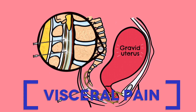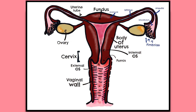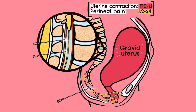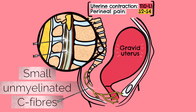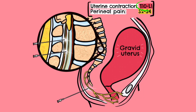Visceral labour pain originates from the uterus as a result of uterine contractions vital in aiding the delivery of the fetus. With each uterine contraction, pressure is transmitted to the cervix, causing it to stretch and distend. The stretching and distension of the cervix activates local excitatory nociceptive afferent nerves, which are often small unmyelinated C fibres. These afferents transit through the cervix through part of the inferior hypogastric plexus, then join sympathetic nerves in the sympathetic chain and synapse in the dorsal horn of the spinal cord via the T10 to L1 nerve roots.